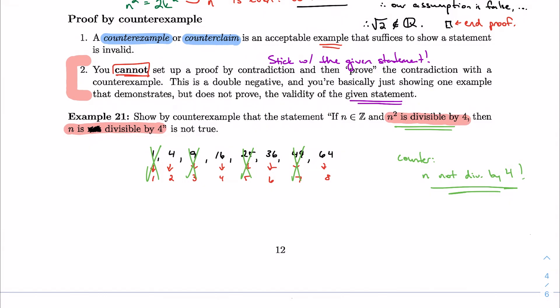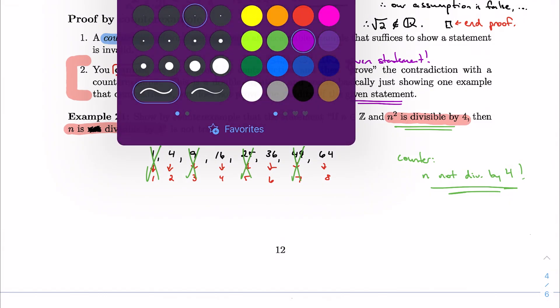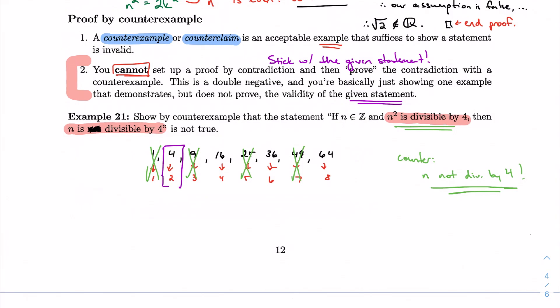Well, I actually have a couple options. I've got 2. So here's a valid one. n equals 2 is a valid counterexample, because 2 squared is 4, which is divisible by 4. But 2 is not divisible by 4.